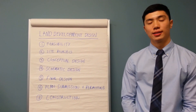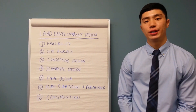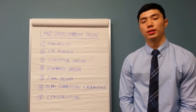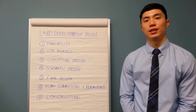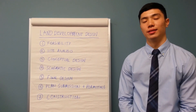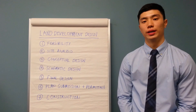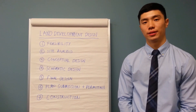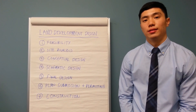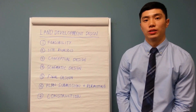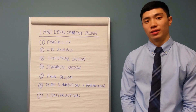Step six, plan submission and permitting. Here the engineer or developer will submit the construction documents to the necessary governing agencies, and they will also apply for the building and site permits. Step seven, once all the agencies approve of the construction documents, it will then go into construction.